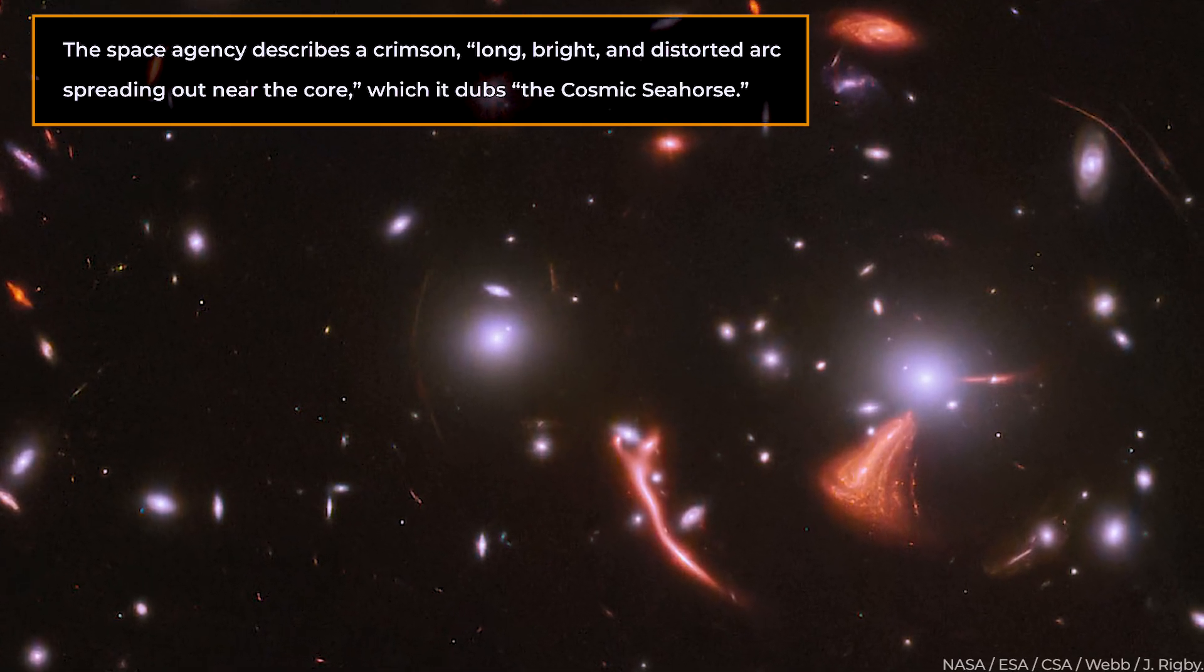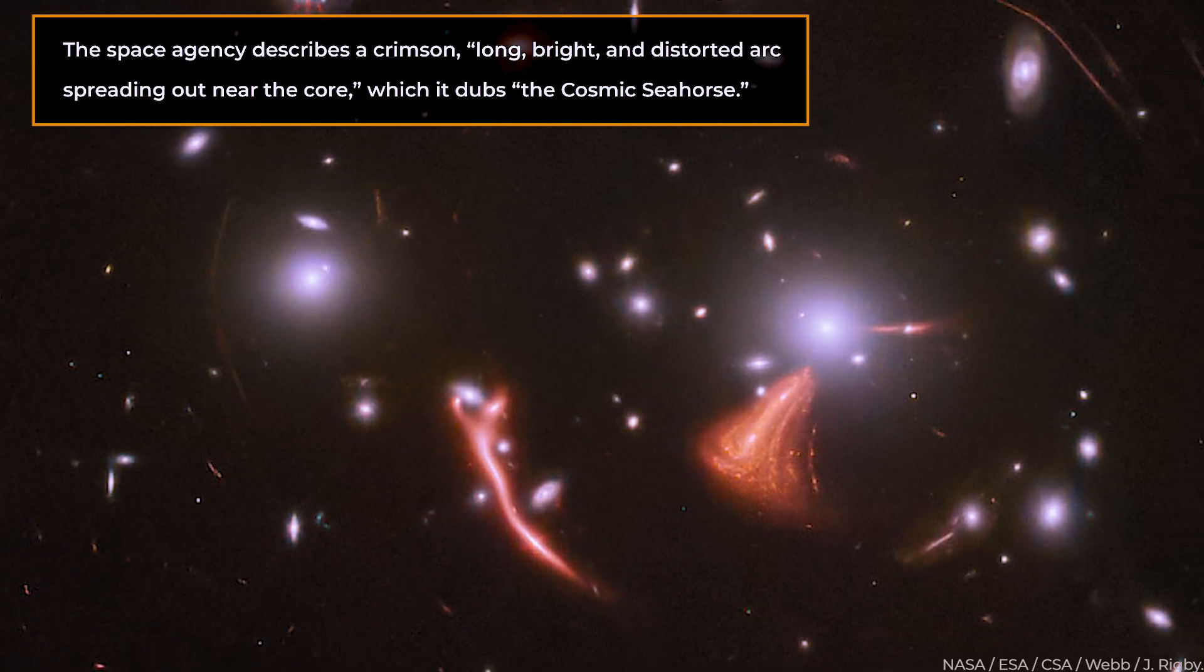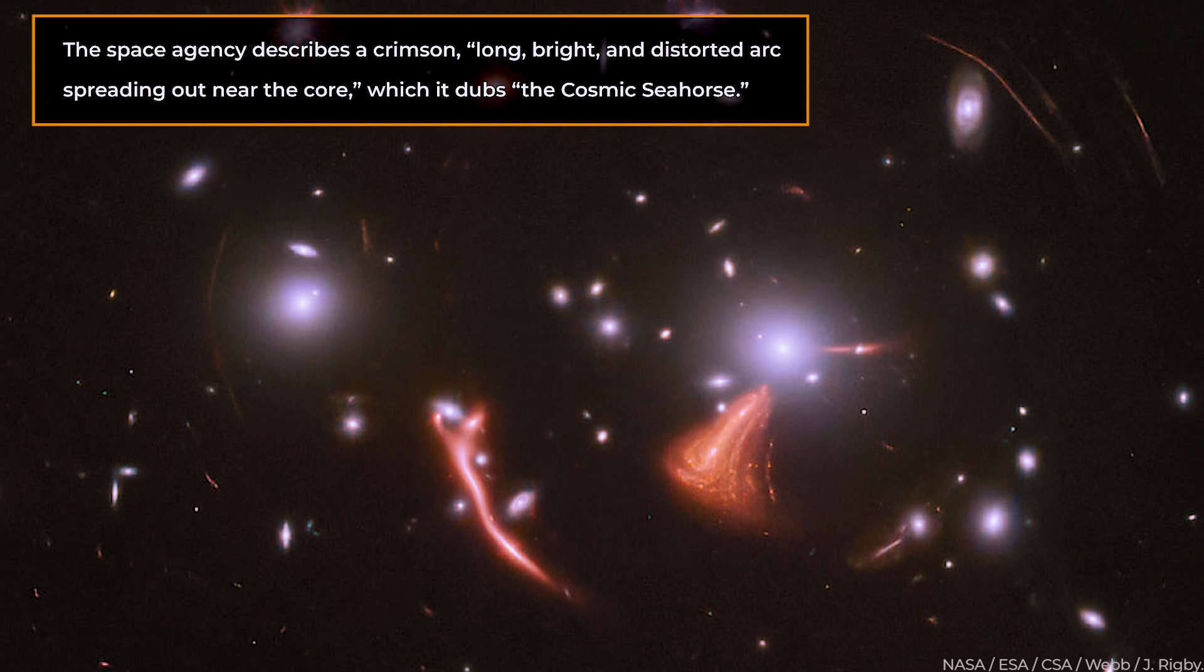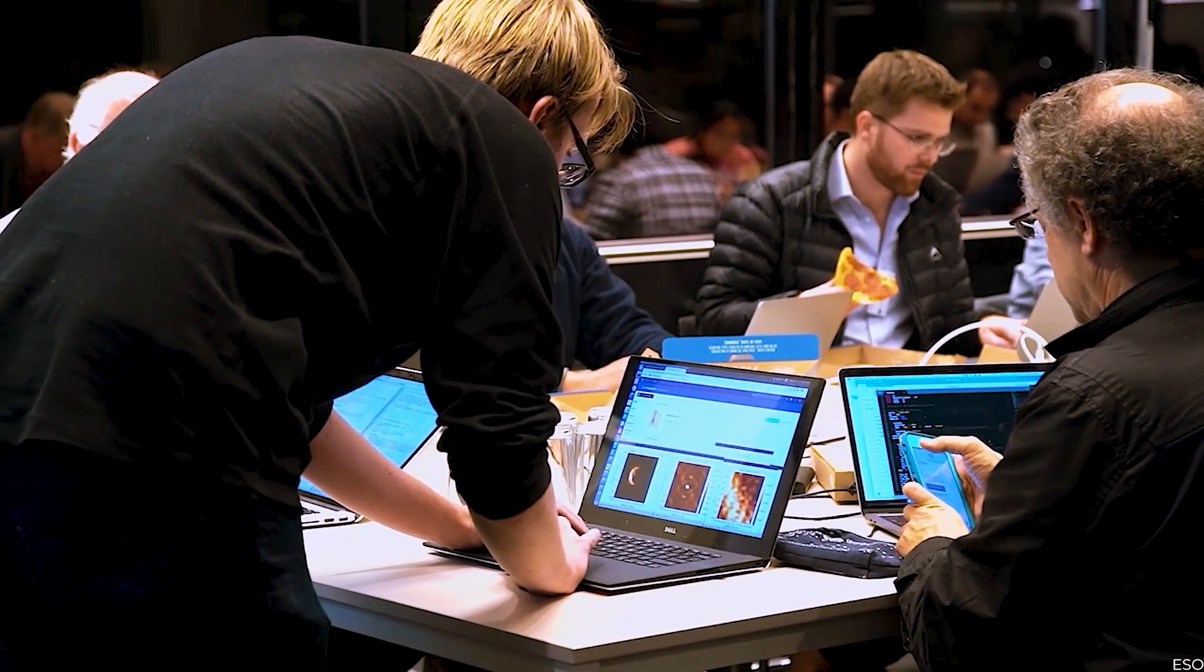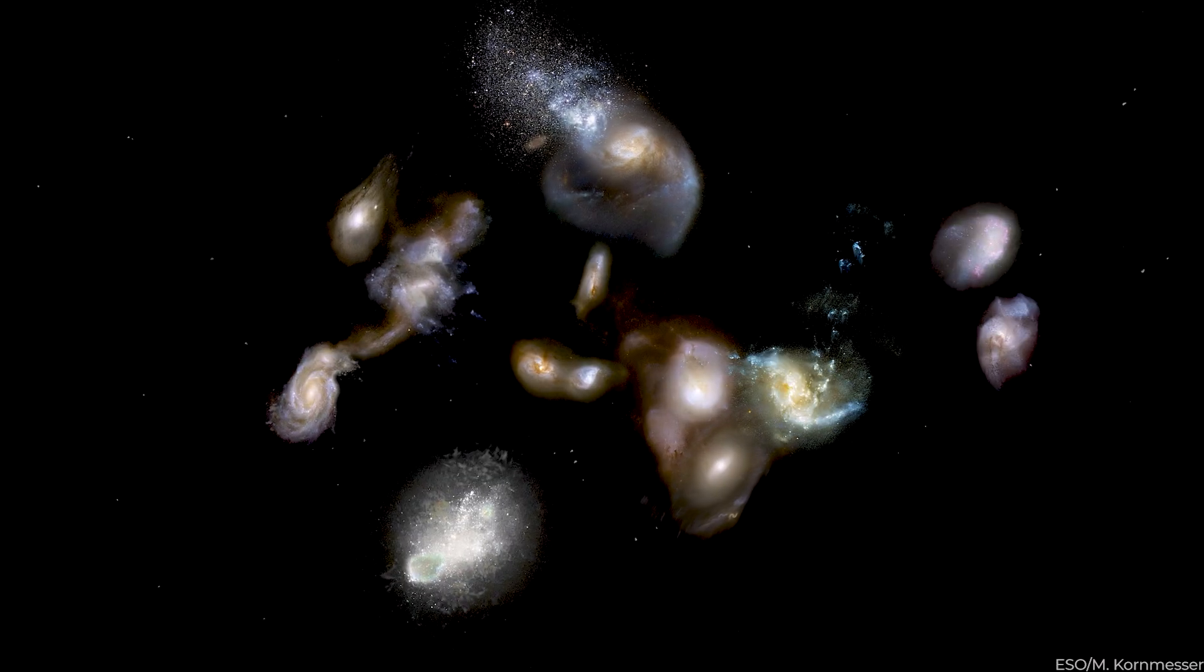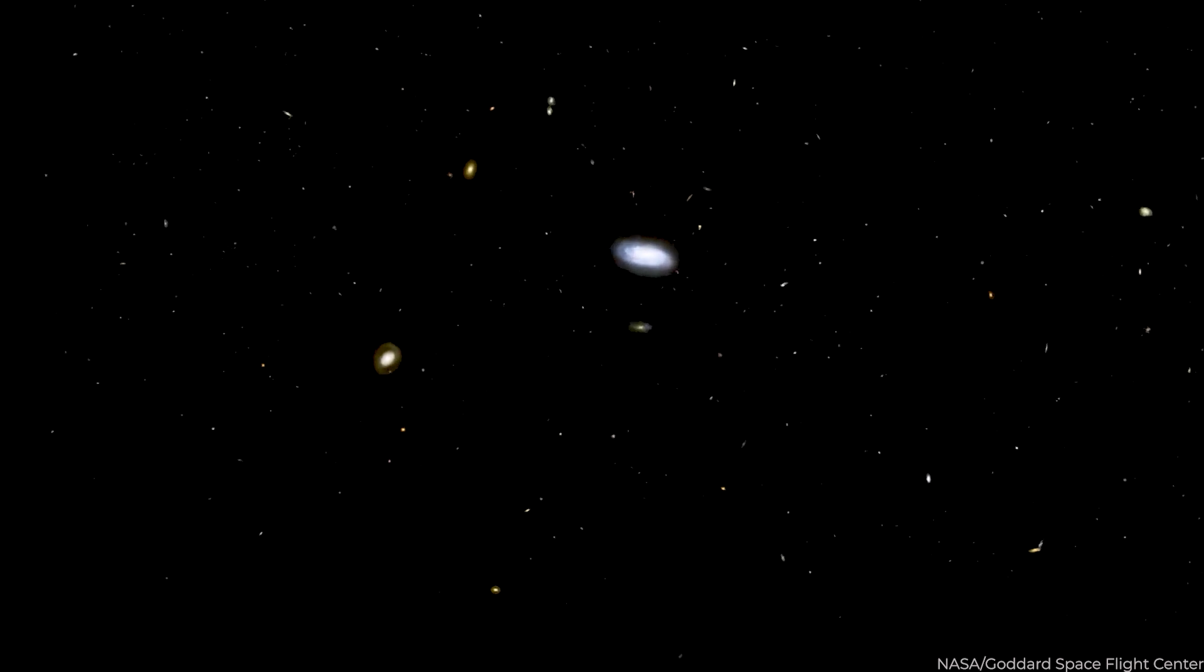These are the elongated red shapes. The space agency describes a crimson, long, bright, and distorted arc spreading out near the core, which it dubs the cosmic seahorse. Scientists may peek into this galaxy and see the star creation within this remote region of space because of such great magnification.